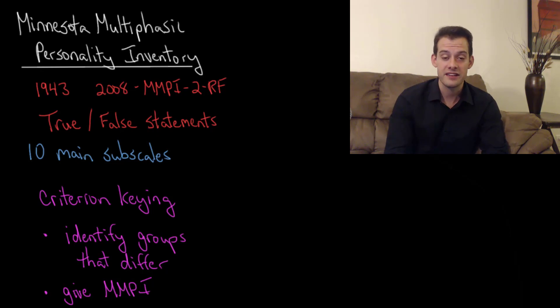The MMPI consists of 338 statements about the self to which a subject will respond either true or false, depending on how much they think that statement matches their sense of self. These statements can be organized into 10 main subscales assessing things like masculinity or femininity, levels of depression, paranoia, etc.